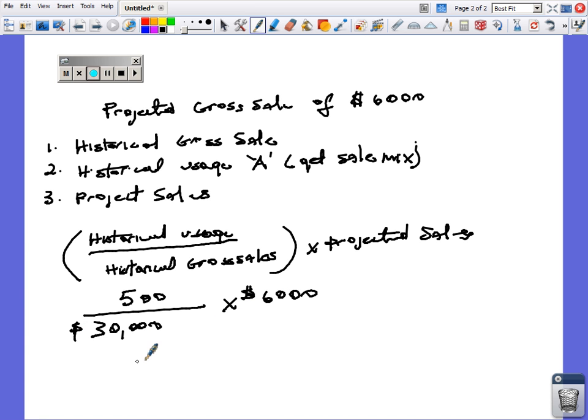What we have is 0.016667 times 6,000 equals 100. And that is correct. 100 units of item A is required to achieve gross sale of $6,000.